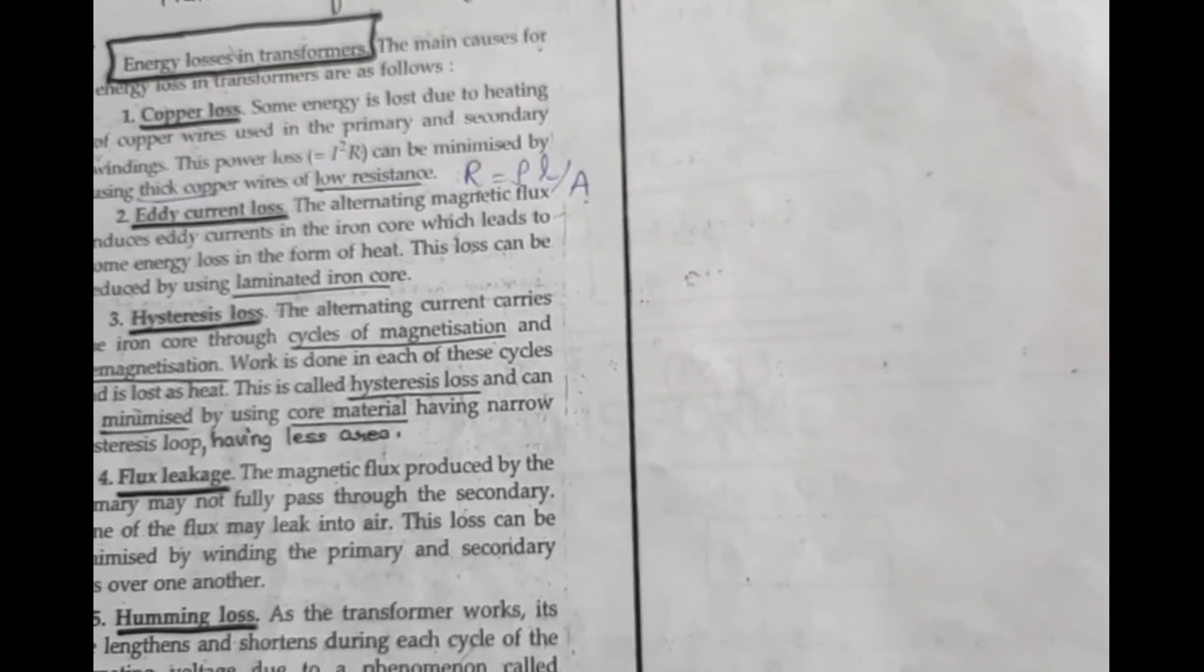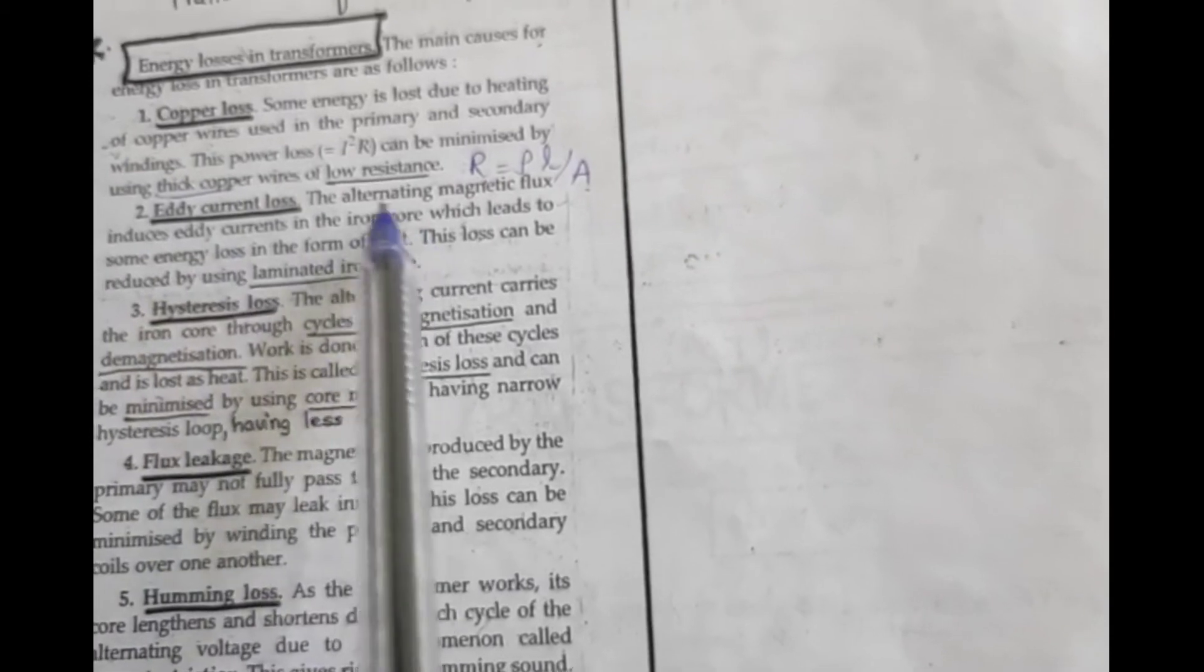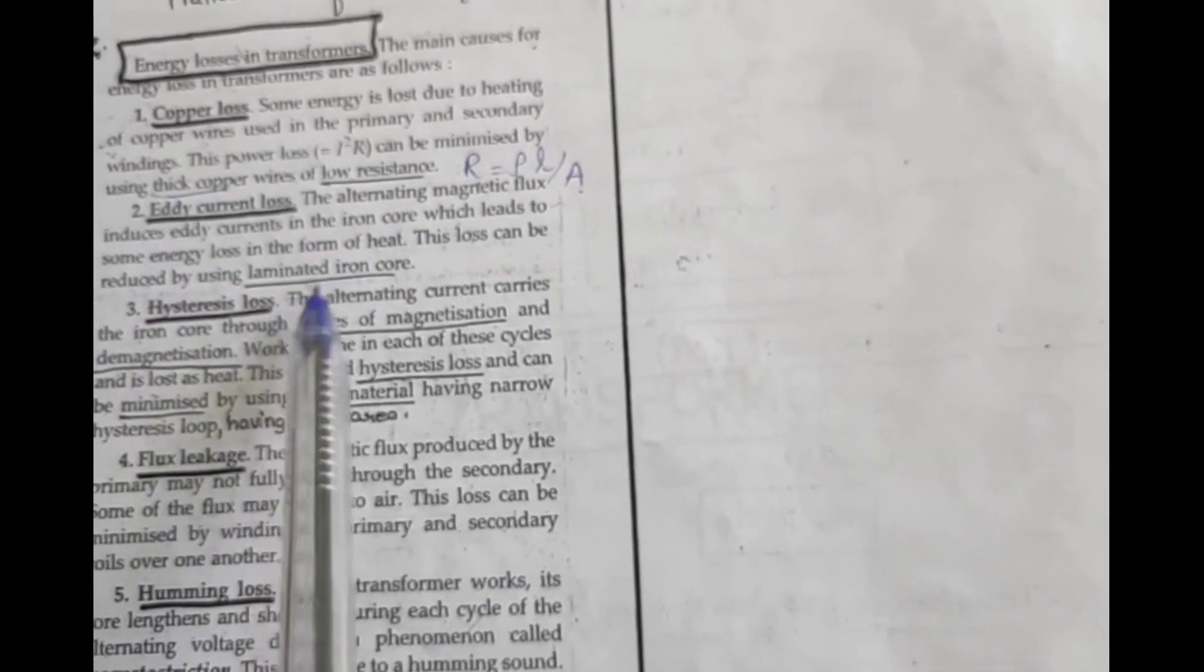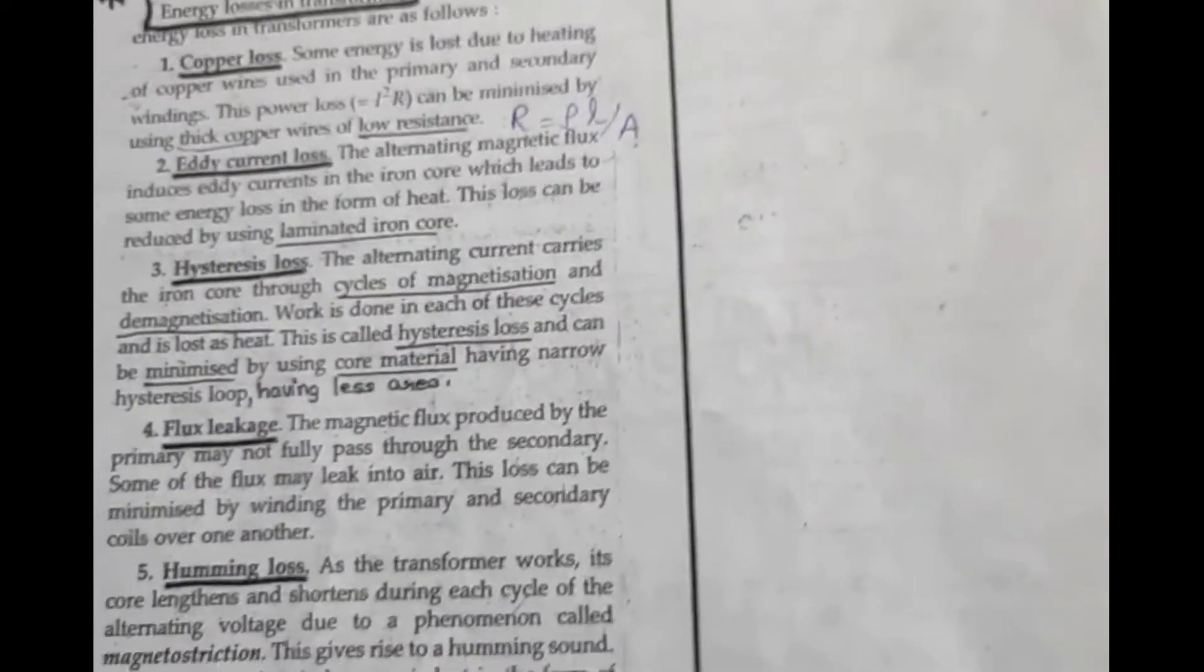Next is loss due to eddy currents. Let's understand eddy current loss. The induced currents that occur in the iron core - we have used laminated iron core to minimize eddy currents.